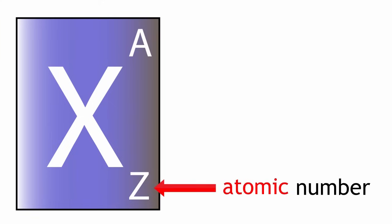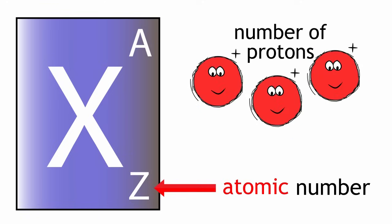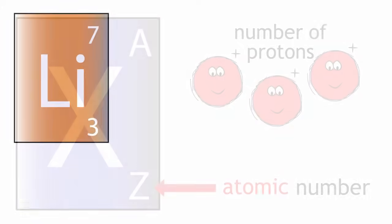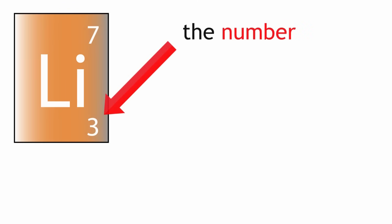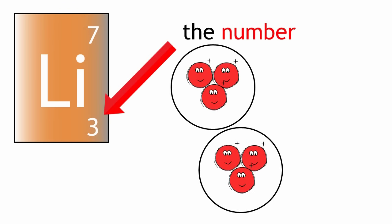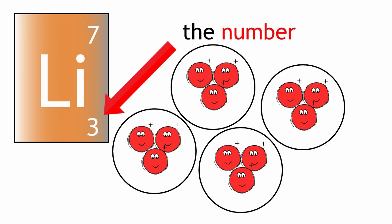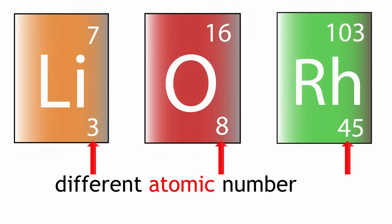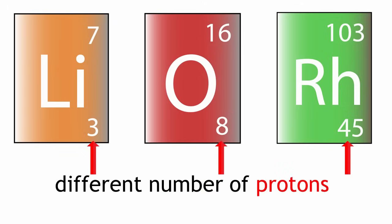The atomic number has a symbol Z. This number tells you how many protons are in one atom of an element. The number is always the same for all atoms of a particular element. Atoms of different elements have a different atomic number, meaning they have a different number of protons.